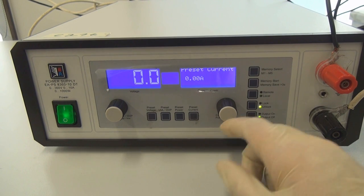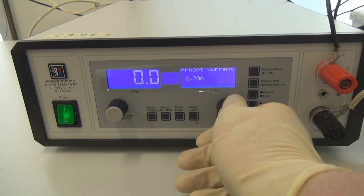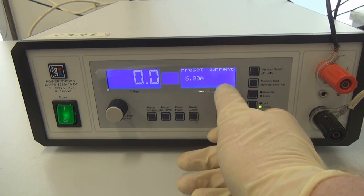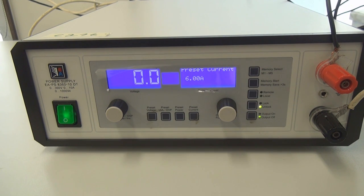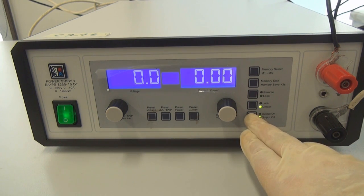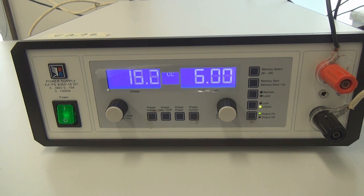Now it's time to select the anodizing parameters on the power supply. I want to do the anodizing at a current density of 2 amperes per square decimetre. Since my plate has a total surface area of 3 square decimetres, I'll need to use a total current of 6 amperes. The anodizing process begins when I turn on the power, and in this case I'll anodize the plate exactly 30 minutes.